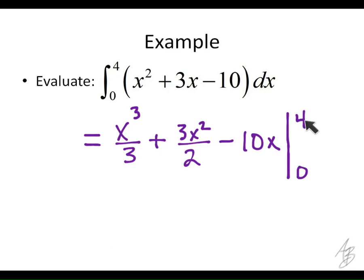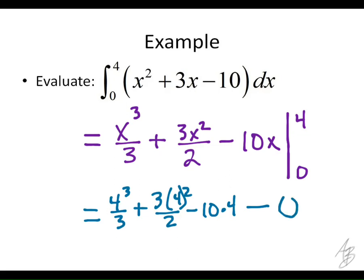So we're going to plug 4 in for x and figure out what that is, and then we're going to put 0 in for x, and we're going to figure out what that is, and we're going to subtract them. So this is going to then equal 4 cubed over 3 plus 3 times 4 squared over 2 minus 10 times 4 minus... When we put 0 in, what's going to happen? Yeah, it's just 0.